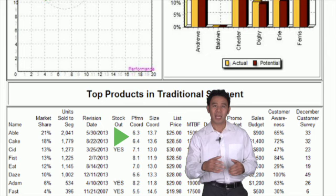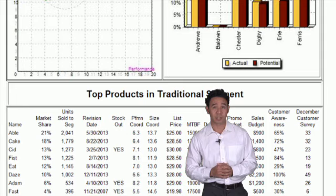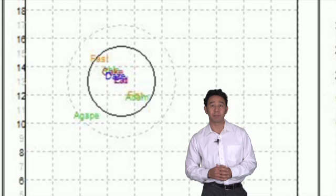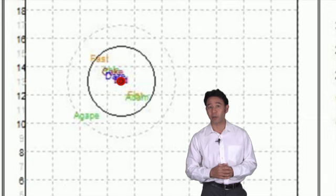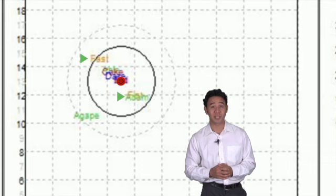Moving on to positioning. Able and Cake's ending positions are almost the same, and by inference, so were their starting positions. But if we look at the perceptual map, we see that both are somewhat behind the ideal spot. This puts them at a small disadvantage relative to products like Eat. And then we have outliers like Adam and Fist. They are at a serious disadvantage.